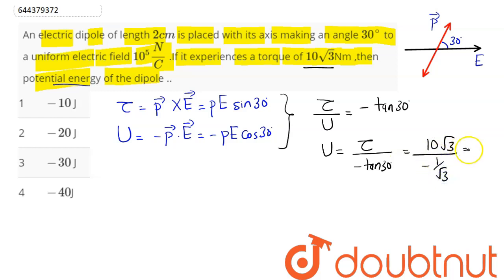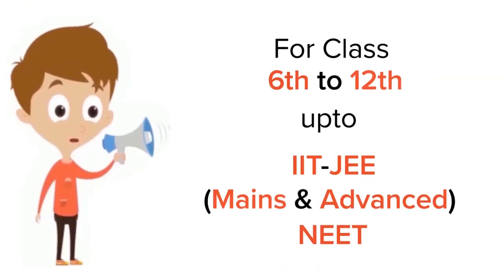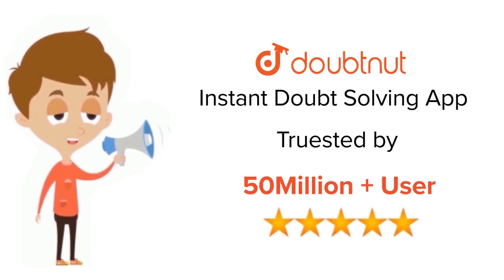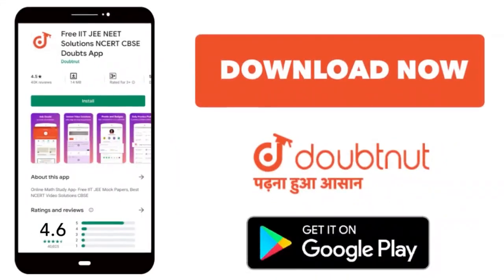...so this comes as minus of 30 joule. Hence minus 30 joule means option number 3 is the correct answer. So 3 is our answer. For class 6 to 12, ITJ and NEET level, trusted by more than 5 crore students, download Doubtnet today.